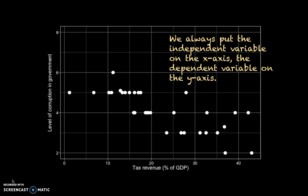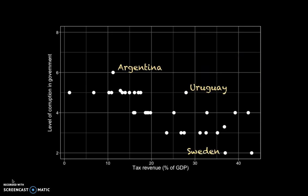Each of those points represents individual countries. Here I just outline a few, so you can see what it represents. Each point is a country in a particular year, in 2000. The further to the right, the higher the tax revenue, and the further to the top, the higher the level of corruption in that country.